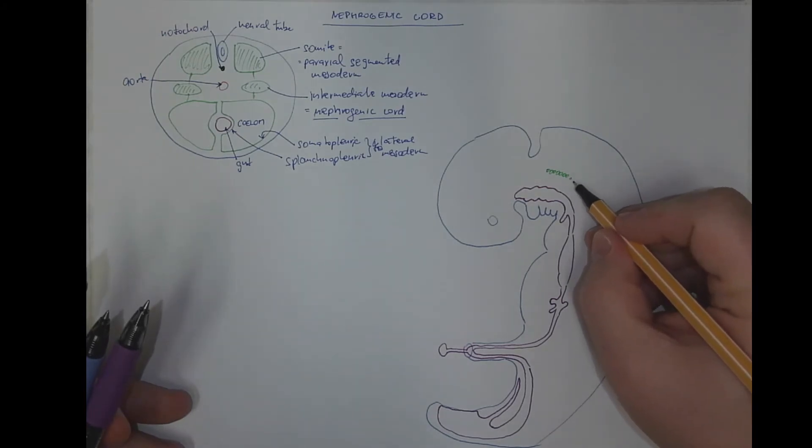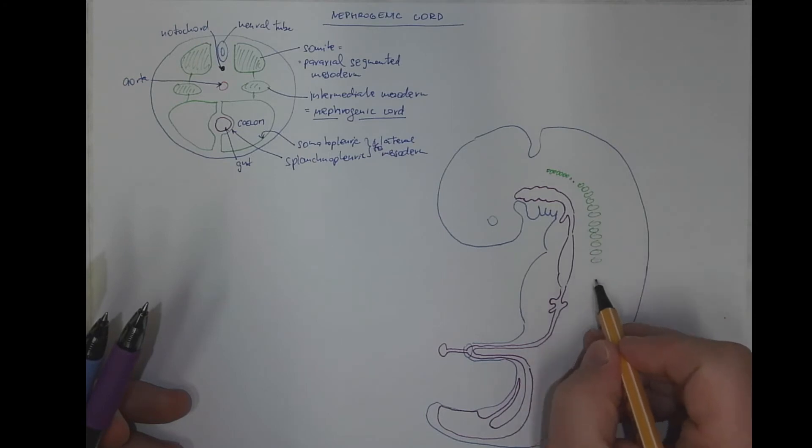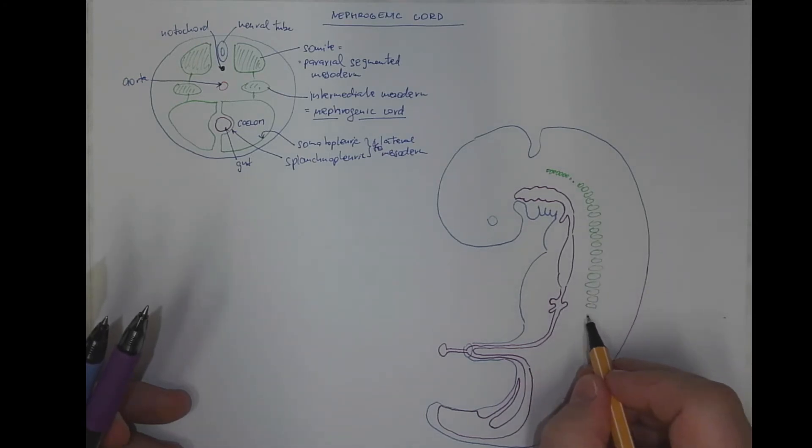While in the thoracic region, in the thoracic and in the lumbar region, we got a large organ called mesonephros, kind of embryonic kidney.